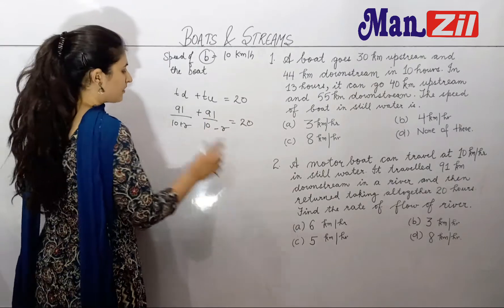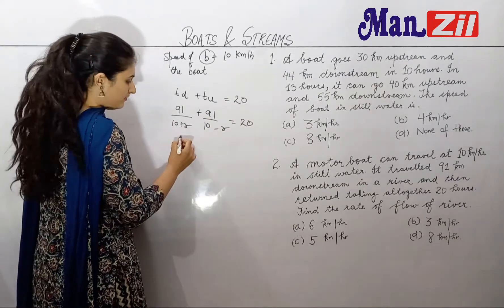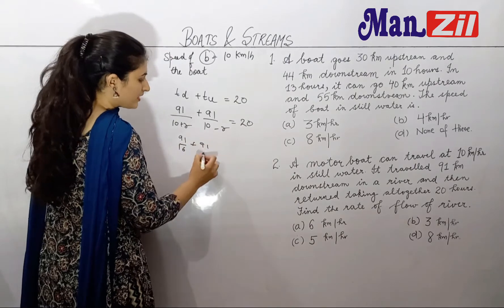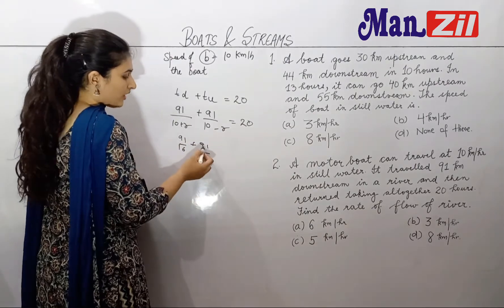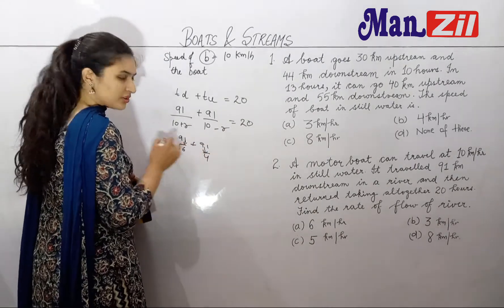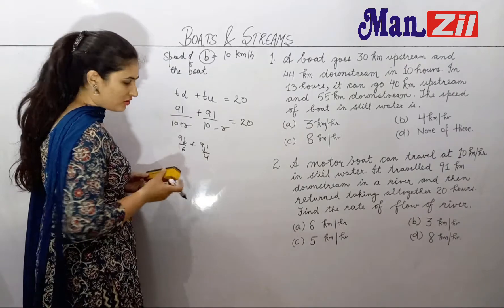When we put R equals 6: 10 plus 6 is 16, and 10 minus 6 is 4. But 91 is not divisible by 4 or 16, so this answer will come out as a fraction. So R equals 6 is eliminated.